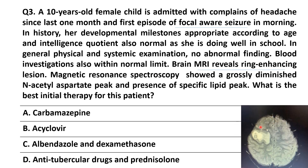This is the image of MRI given with the MCQ. Here you can see the ring enhancing lesion and also a conglomeration with the ring enhancing lesion. The lesion is surrounded by large perilesional edema — severe edema is present. Furthermore, magnetic resonance spectroscopy (MRS) showed grossly diminished N-acetyl aspartate peak with the presence of a specific lipid peak, which is a significant finding I will explain later.